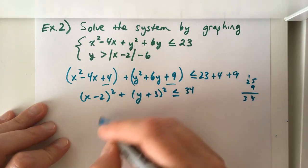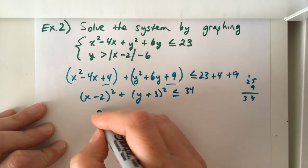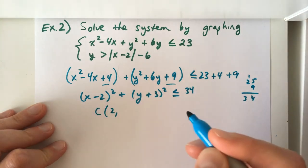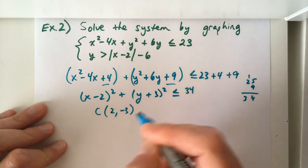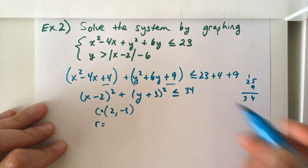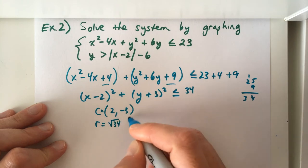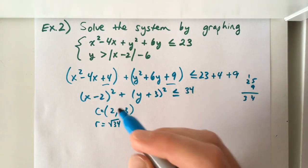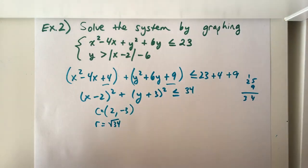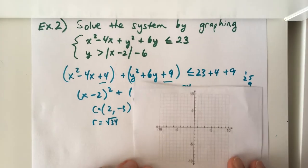So the center of the circle is 2, negative 3. And the radius is the square root of 34, which we know is going to be slightly less than 6. So we can go ahead and graph what we know so far.